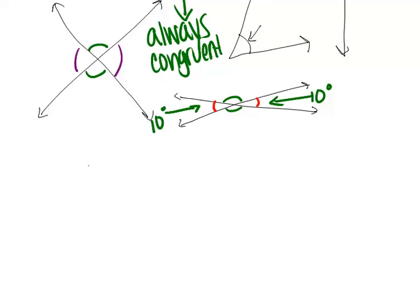So let's just draw a picture, and we'll just do a proof with a specific example. So let's just say that this angle is 100 degrees. Now you should know what this angle is based on your knowledge of linear pairs.